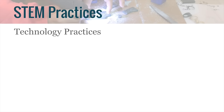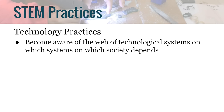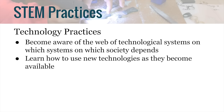Here are the technology practices. Practice one: become aware of the web of technological systems on which society depends. Help students think more broadly about technology and emphasize how technologies created by humans are here to serve our needs and desires. Practice two: learn how to use new technologies as they become available. Help students learn how to use new technology, how to choose appropriate ones for a situation, and observe how others use technology.